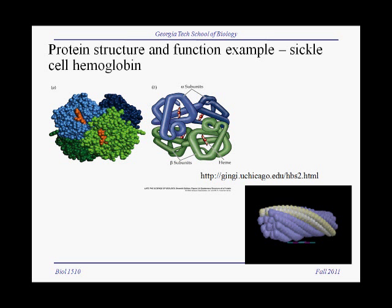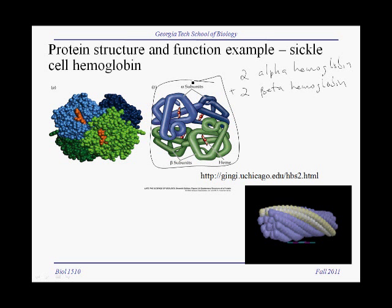In the last video I mentioned how one of our emphases is on structure-function relationships and how changes in the structure can change function. We'll take a look at hemoglobin as an example, and the sickle cell variant of hemoglobin. Hemoglobin has four polypeptide subunits, so it has quaternary structure — two chains of alpha hemoglobin plus two chains of beta hemoglobin. Normal hemoglobin has these tetrameric structures along with a heme group that binds oxygen, and our red blood cells are filled with these tetramers.